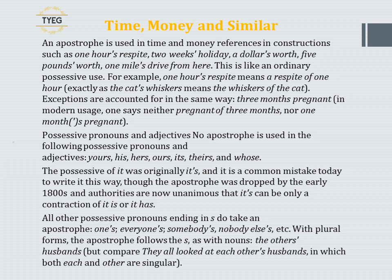An apostrophe is used in time and money references in constructions such as 'one hour's respite', 'two weeks' holiday', 'a dollar's worth', 'five pounds' worth', 'one mile's drive from here'. This is like an ordinary possessive use — 'one hour's respite' means 'a respite of one hour', exactly as 'the cat's whiskers' means 'the whiskers of the cat'. Exceptions such as 'three months pregnant' are accounted for in the same way.